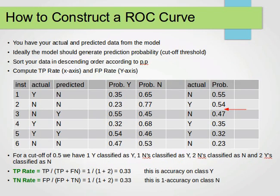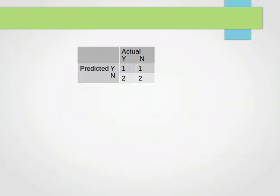And remember, we said we can easily build the confusion matrix out of these values. And this is the corresponding confusion matrix for that.